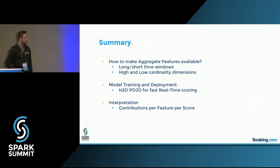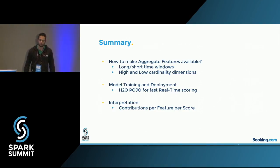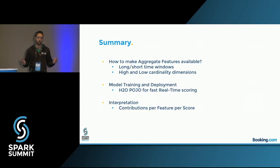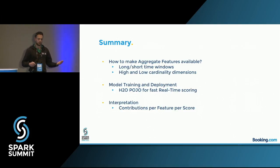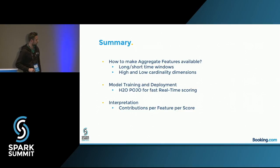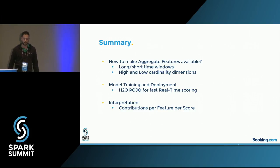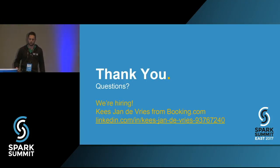I'm reaching the end of my talk. I hope you take away these three messages. First, how to make aggregate features available in real time — with trade-offs between long and short time windows, between exactly real time versus a small lag, and between high versus low cardinality. If you need features for all your users, consider a database like Cassandra. Second, on model training and deployment — having Java code generated so you can deploy it on your JVM is a big win. Third, interpretation of individual scores: if you can not only say the probability is high, but also why, that's very valuable. Thank you for your attention.